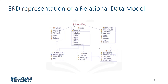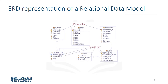Notice the entities in the lower half of the screen. Some attributes have FK in brackets next to them. For example, the copy entity has attribute book ID with FK in brackets. This identifies the foreign key. A foreign key is a set of columns referring to a primary key of another table.